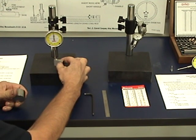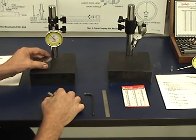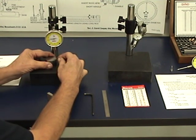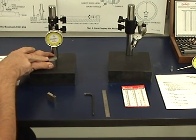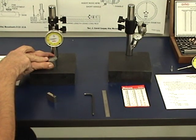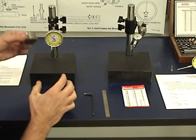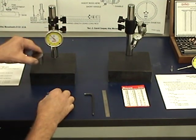One inch gauge block, set it on zero, pull it out, put your part on there. And the difference between the one inch gauge block and your part is going to be your size. So we have seventy-three thousandths. So this part is one inch and seventy-three thousandths.